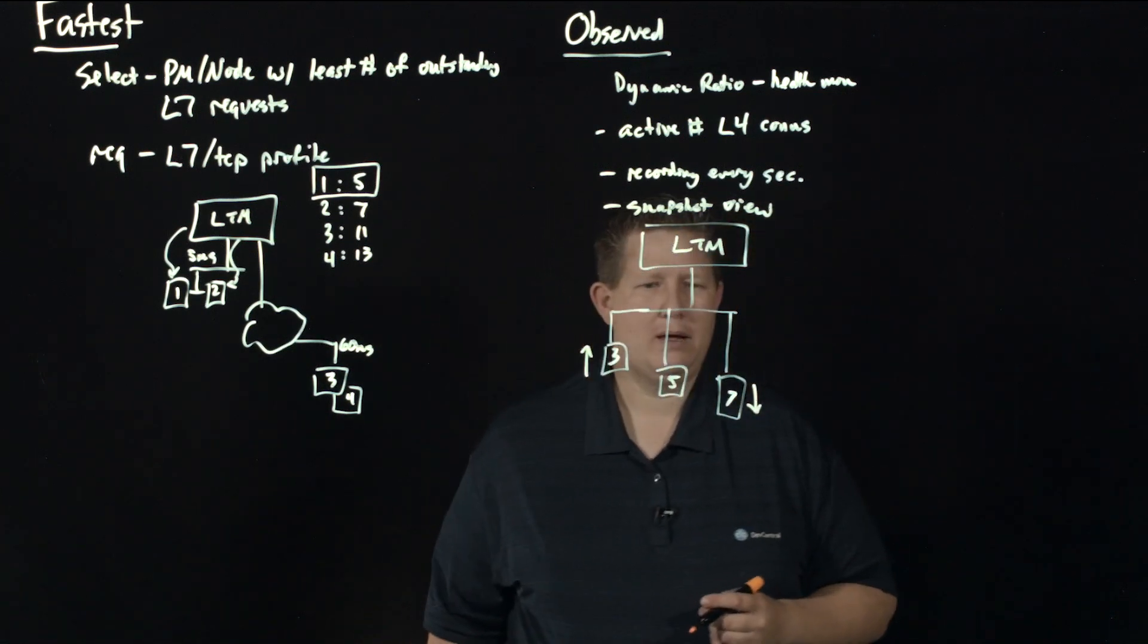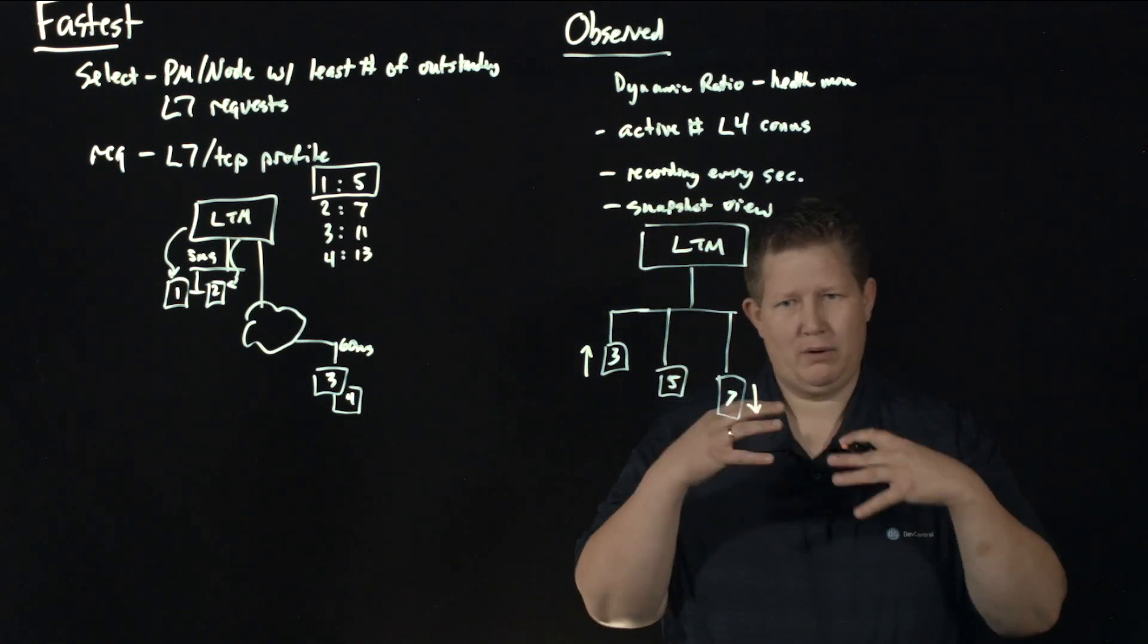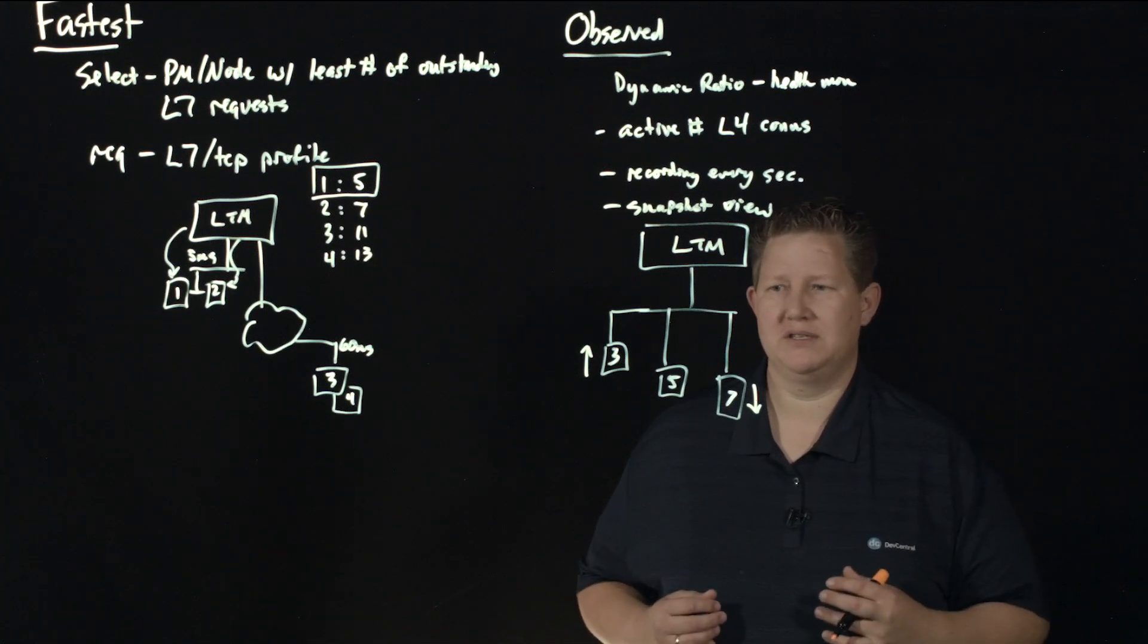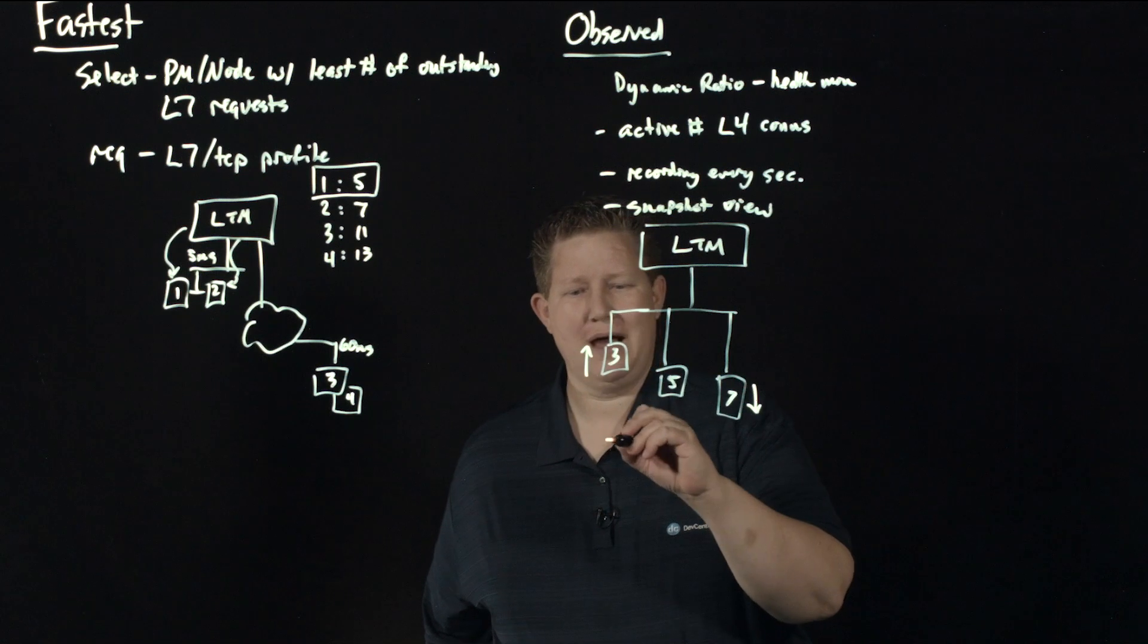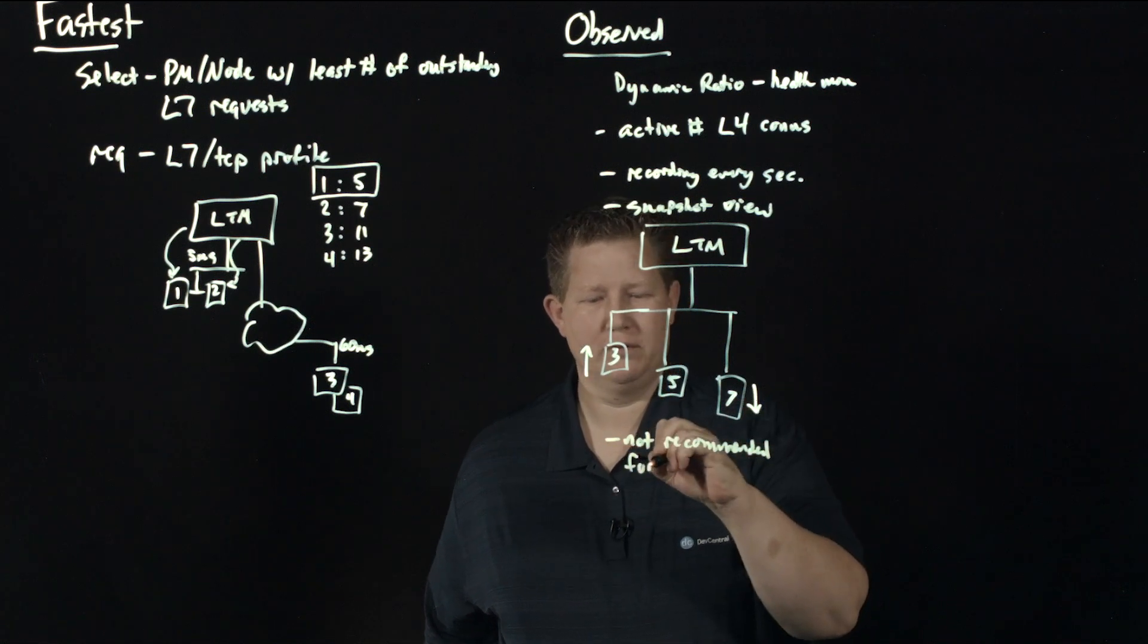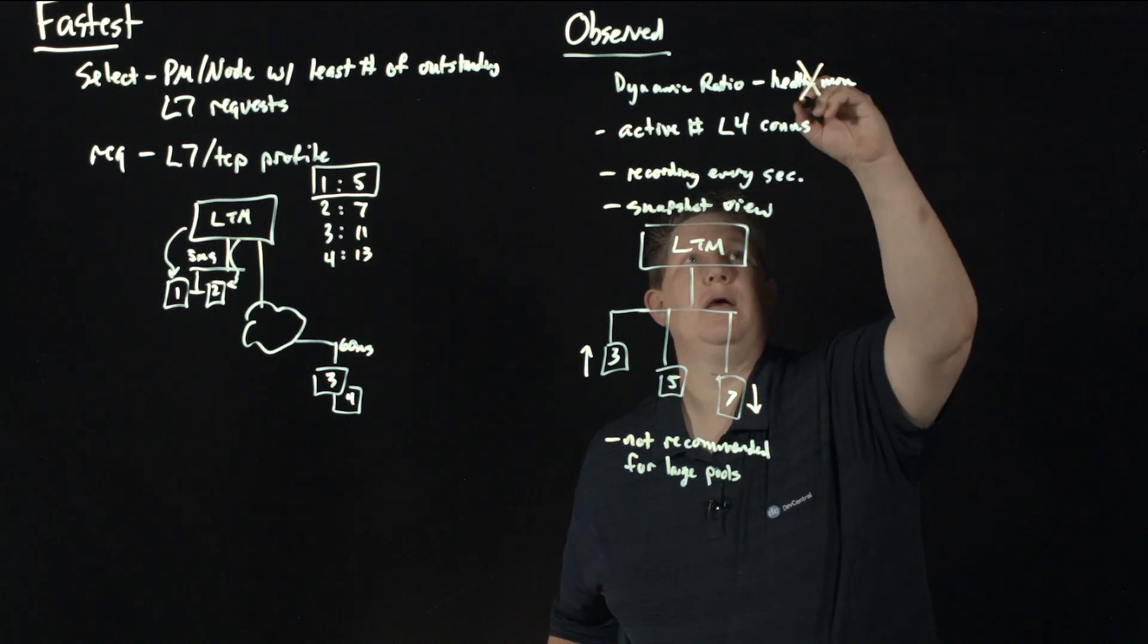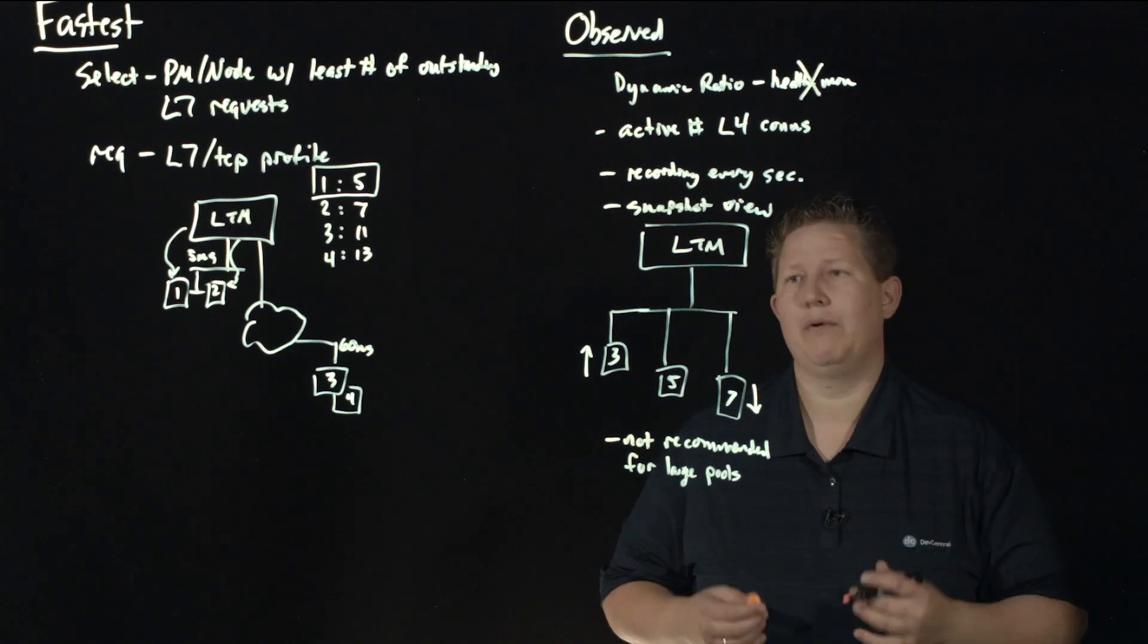You can enable your debug data on your system to look at how all of these ratios come into play. You can also take a look at your Wireshark data and see the flow of connections as they increase and decrease with observed and predictive. One thing to note is this is not recommended for large pools. It is doing a dynamic ratio not on health monitors—it's using the system data, taking counters of the active number of L4 connections and building that ratio for you.